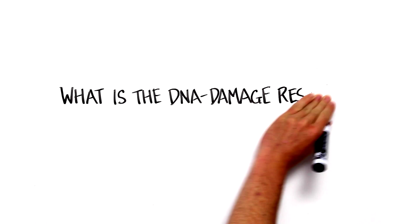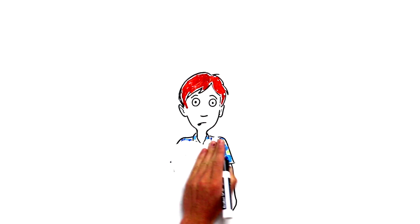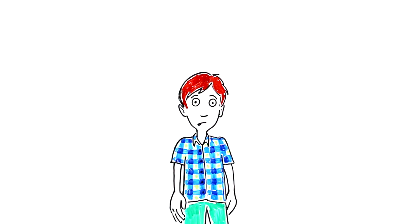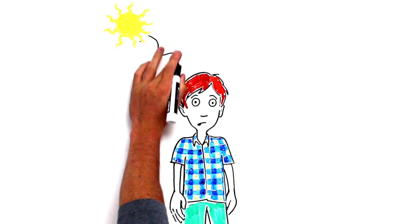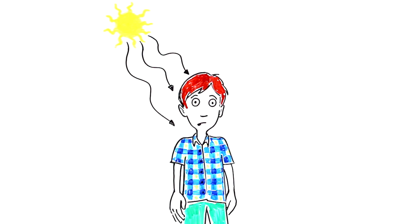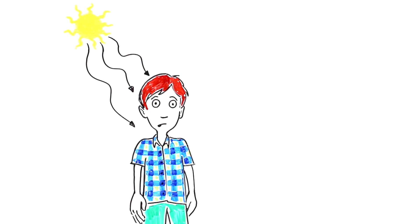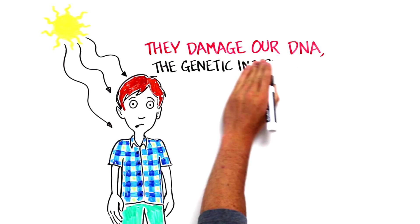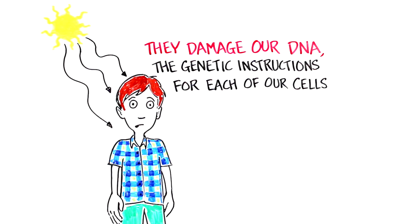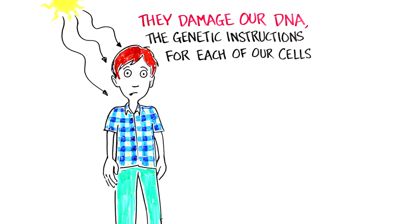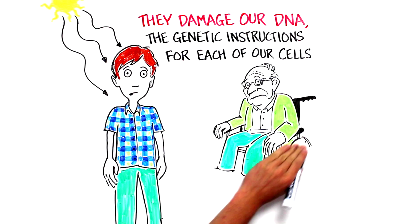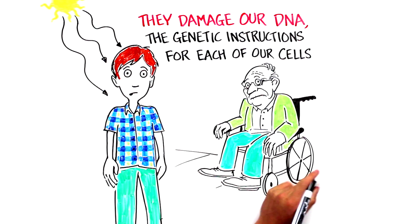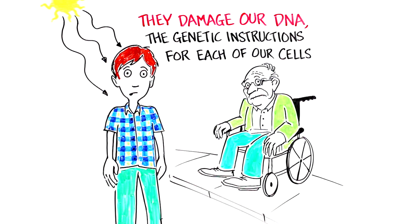What is the DNA damage response? Every day we are bombarded by threats we can't even see. Ultraviolet rays from the sun can lead to skin cancer, and particles in the air we breathe can make us sick. Many of these threats work in similar ways: they damage our DNA, the genetic instructions in each of our cells. This DNA damage can cause a cell to go rogue, which is the cause of many cancers, and can also cause some of the health problems associated with aging.